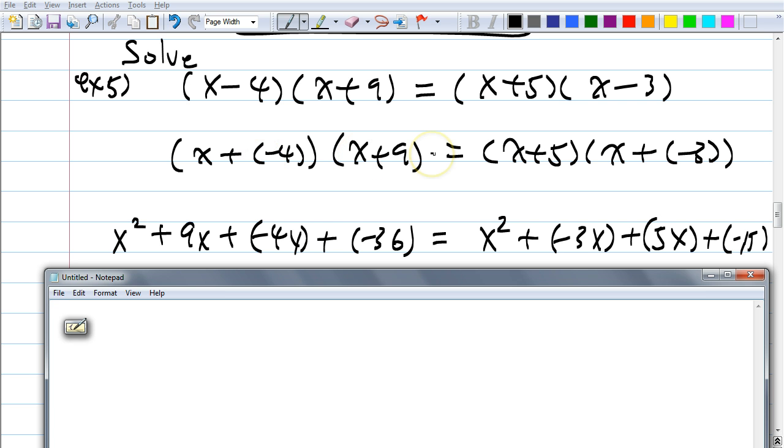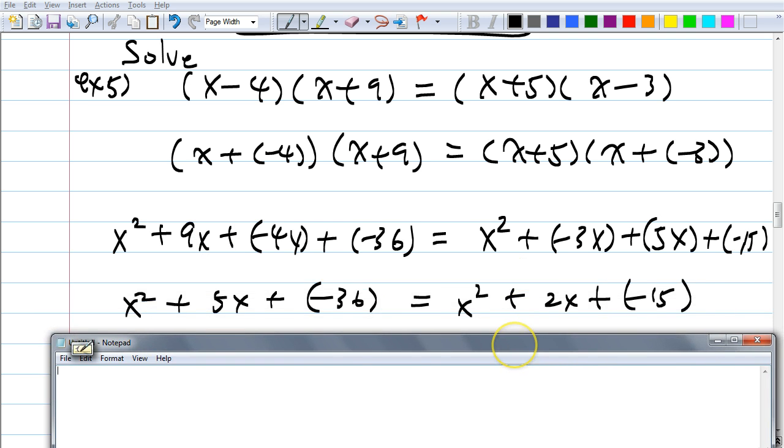As you can see, as I change all these binomials as an addition, each of these, in between each of these terms there is addition. Okay, so I got x squared plus 5x plus negative 36 equals to x squared plus 2x plus negative 15, right?